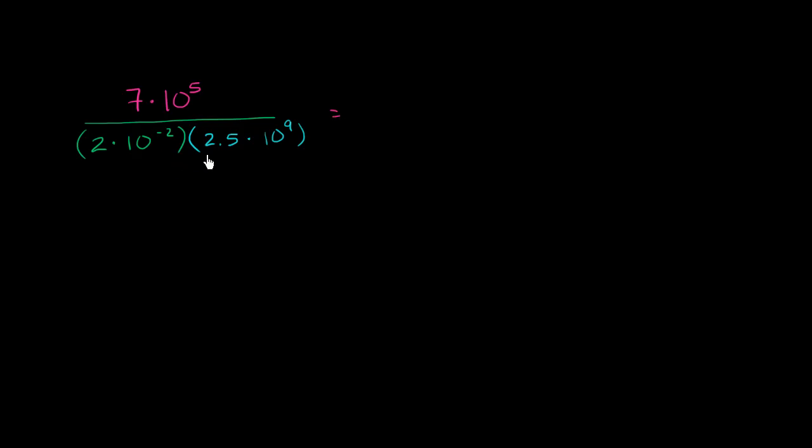And I'll start off by trying to simplify this denominator here. So the numerator is just 7 times 10 to the fifth. And the denominator, I just have a bunch of numbers that are being multiplied times each other. So I can do it in any order.